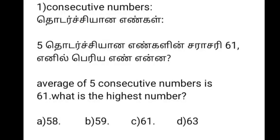So friends, first question — consecutive numbers. Question: What is the average of five consecutive numbers is 61? Then what is the highest number? Option A: 58, Option B: 59, Option C: 61, Option D: 63.